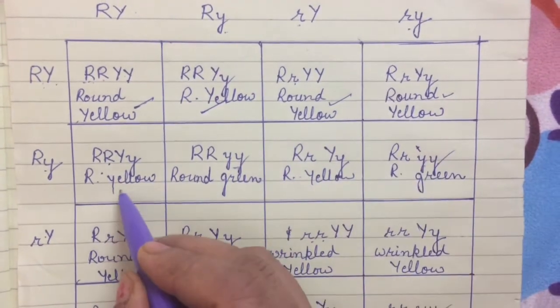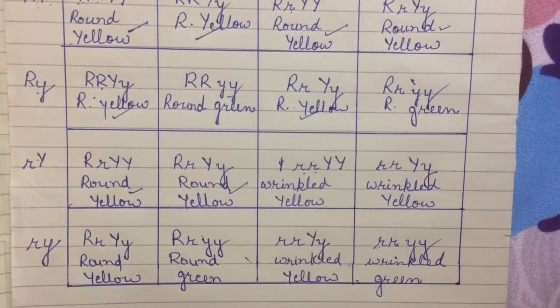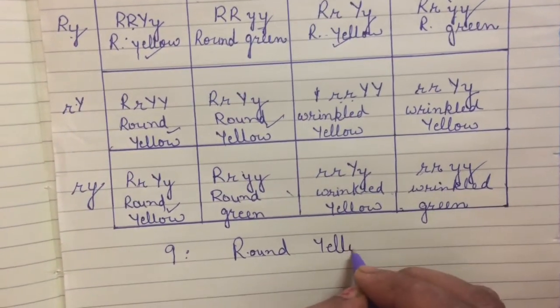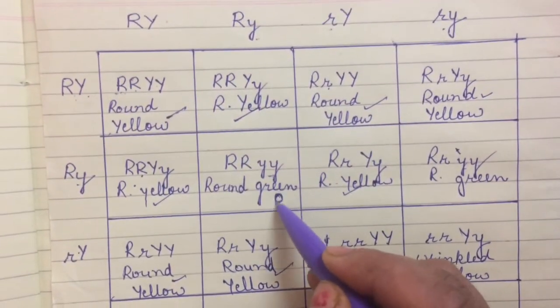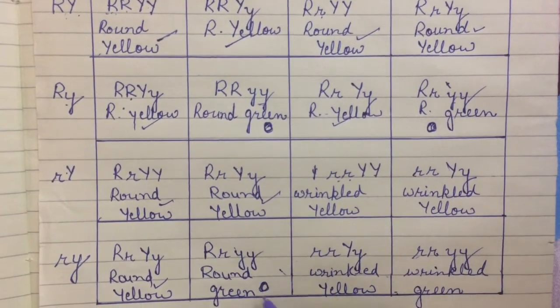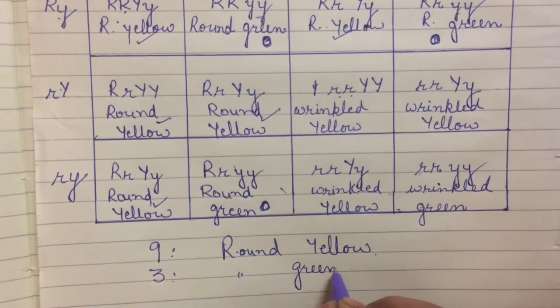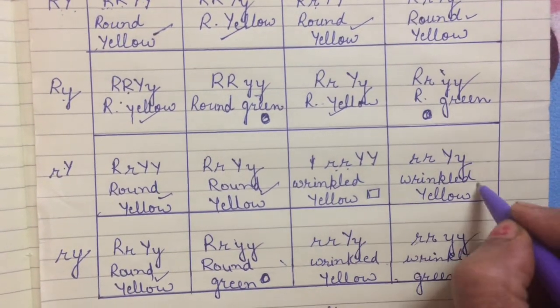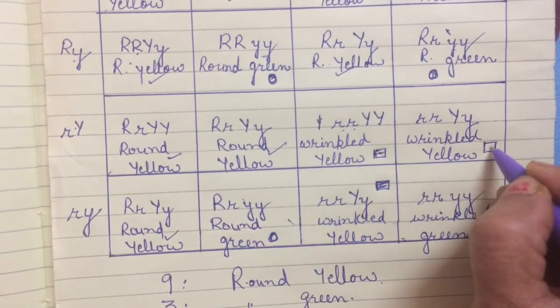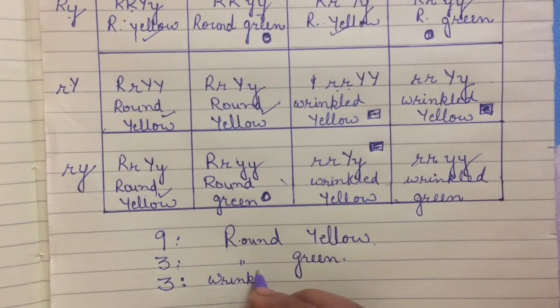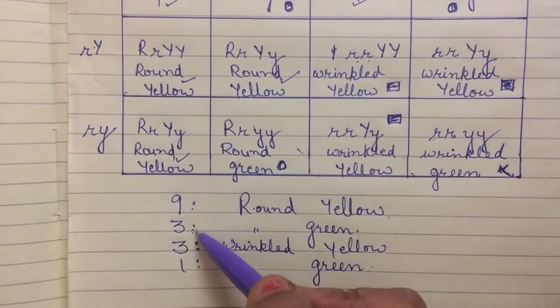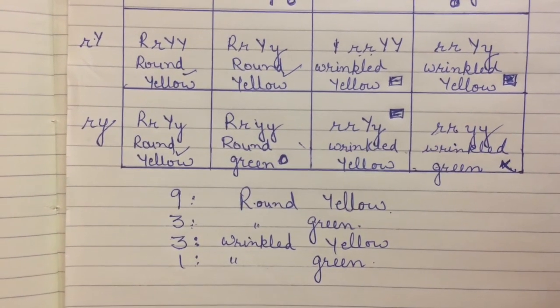Ab hum count karenge kitne round yellow hain — dominant wale: one, two, three, four, five, six, seven, eight, nine. To aapke 9 ban gaye round yellow. Round green kaun kaun se hain? Round green — ye teen hain round green. Next teen kaun se hain — wrinkled yellow: one, two, three — ye teen ho gaye wrinkled yellow. Aur jo ek hai, recessive trait — wrinkled green. To apni F2 ki ratio aa gayi: 9 is to 3 is to 3 is to 1. I hope this cross is clear. Thank you.